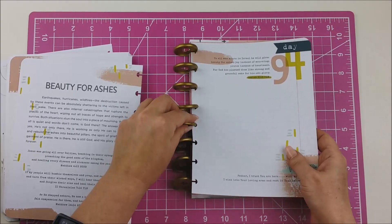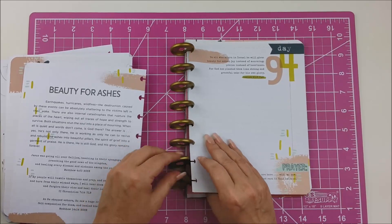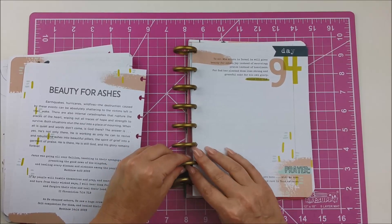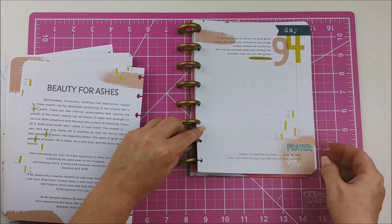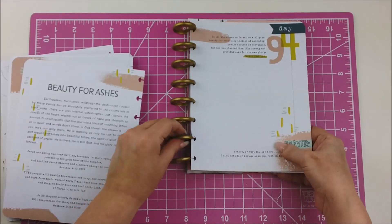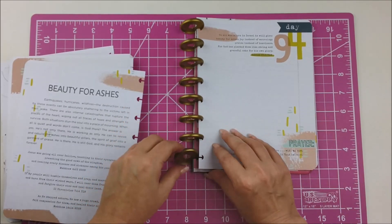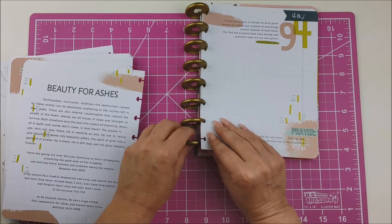And it will get easier as you go because your discs will start staying in more of a formation. But if you're familiar with happy planners you've done this probably a hundred times. And happy planners aren't the only ones that use these discs. There are the arc planners like the paper punch that I have.